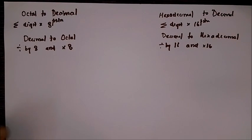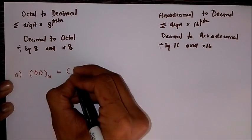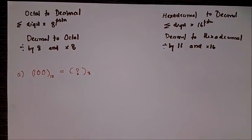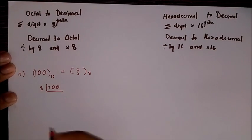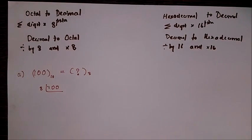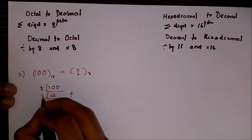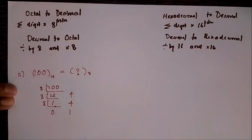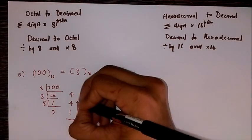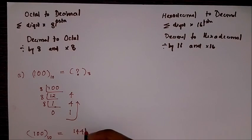Let's consider a single example for each. Convert 100 decimal into octal. We divide continuously by 8: 100 ÷ 8 = 12 remainder 4, then 12 ÷ 8 = 1 remainder 4, then 1 ÷ 8 = 0 remainder 1. Reading the remainders from bottom to top, 100 decimal equals 144 in octal.